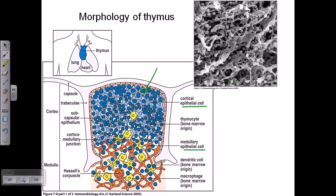These epithelial cells are called cortical epithelial cells and medullary epithelial cells depending on their location. The part close to the capsule is called the cortex, so epithelial cells there are called cortical epithelial cells. The central region is called the medulla, and epithelial cells there are called medullary epithelial cells. Both can be visualized in this picture — cortical epithelial cells are colored in blue and medullary epithelial cells in orange or red. These cells look like dendritic cells and hold onto each other to make a mesh-like network containing gaps for other cells.